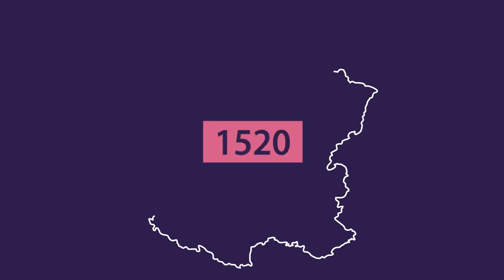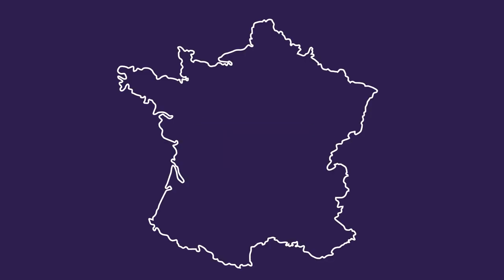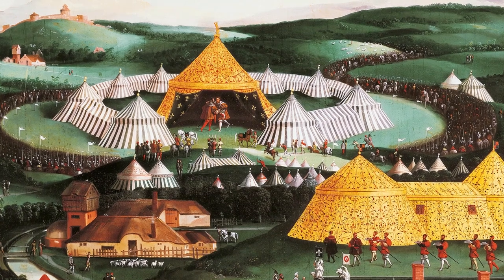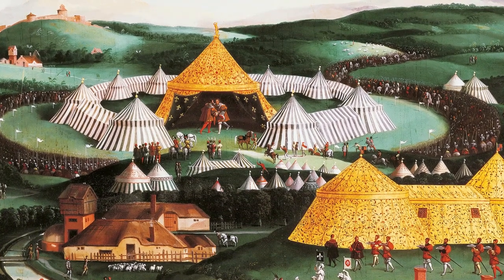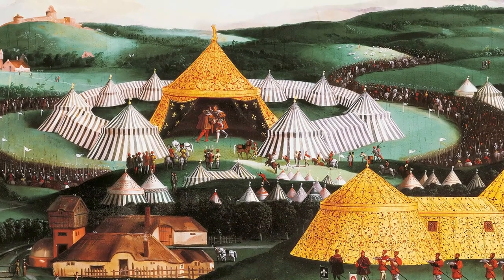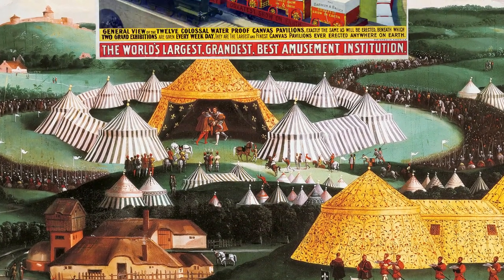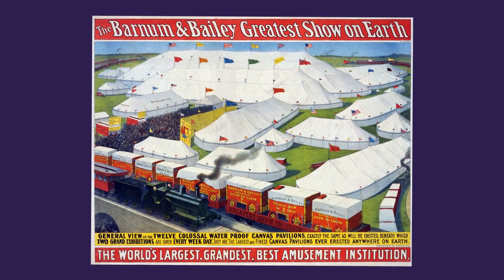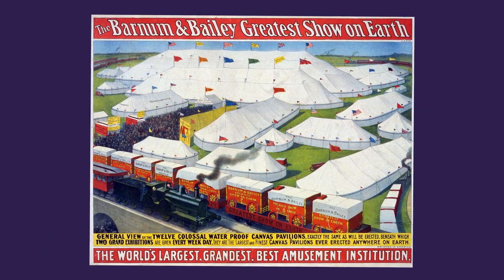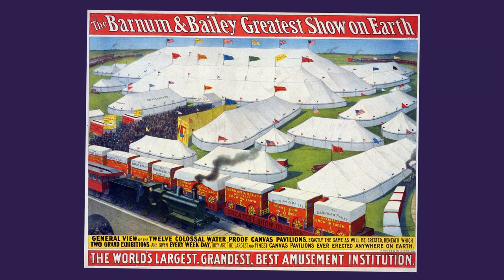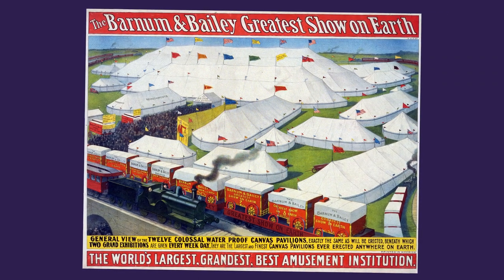In 1520, a large temporary palace was erected in France, near Calais — the banqueting house of Henry VIII, a structure of 37 meters in diameter and 40 meters high. The building's timber structure is reflected in the design of circuses to this day. The Barnum and Bailey greatest show on earth utilized 14 demountable tents, covering a minimal area of 200 by 300 meters. It toured Europe several times.